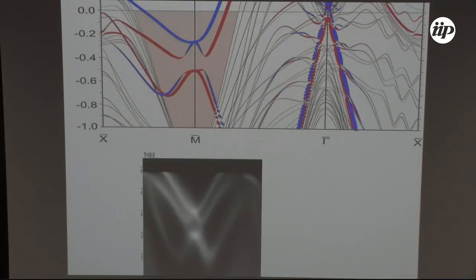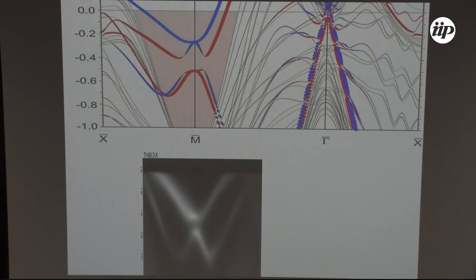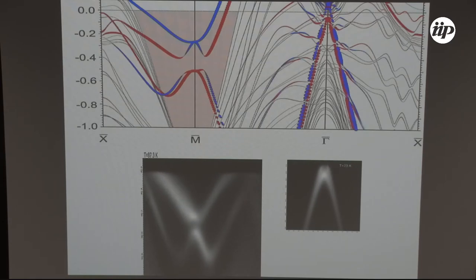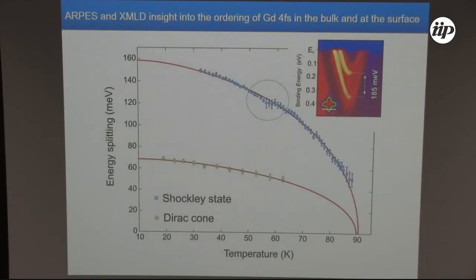This can be easily verified by photoemission. Temperature measurements performed from 120 K down to 10 K show how the magnetic splitting of the surface state can be seen in ARPES, together with the Dirac cone. This is perhaps one of the first examples of how a Dirac cone feature becomes split due to exchange interaction with a magnetically ordered 4f layer. Analyzing the temperature dependence of both states, we found the Dirac cone starts to show splitting at ~60 K while the surface state at ~90 K.